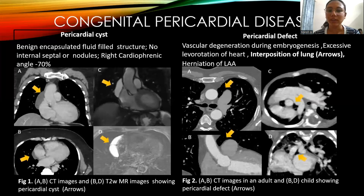The figures show CT images of an adult and child respectively with pericardial defect.